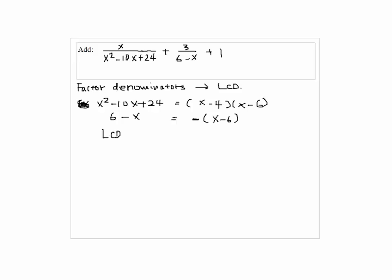So the LCD here will be x minus 4 and x minus 6. So x minus 4 times x minus 6 will be the LCD. We're going to rewrite each fraction in terms of LCD.